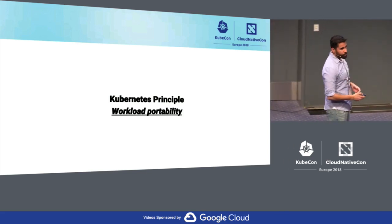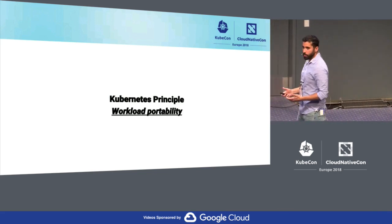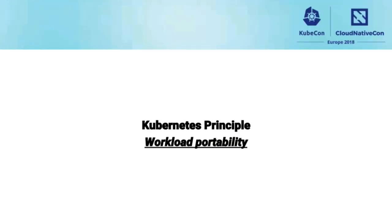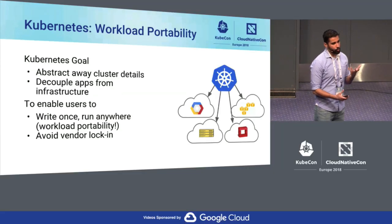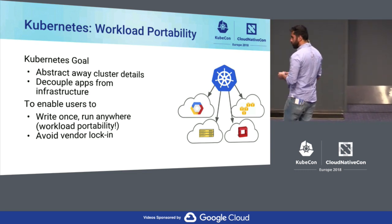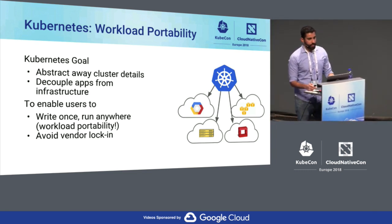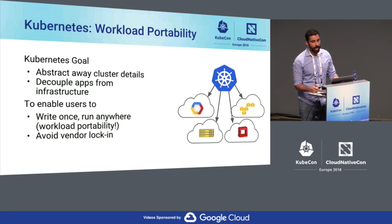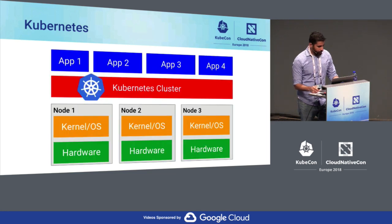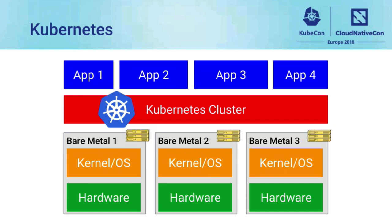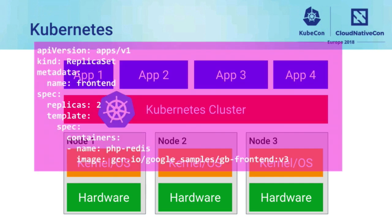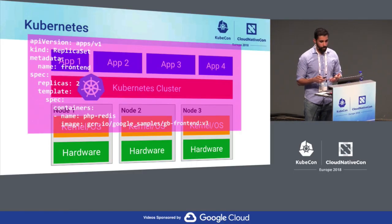One of the most important principles of Kubernetes is the idea that we want to make workloads portable across clusters. It doesn't matter what type of cluster you're running on — we want to abstract away the implementation from your actual workload. This allows you as an end user to write your application once and deploy it anywhere: on GCE, on Amazon, or on your own on-premise deployment. The way you deploy your application is going to be consistent — you use the same exact YAML regardless of what cluster you're running on.